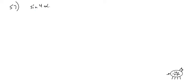Problem 57: sine of 4 alpha equals 4 sine of alpha cosine of alpha cosine of 2 alpha. This is very similar to cosine of 3 alpha that you did in class. We're working on the right-hand side, though you could also look at the left-hand side and just split up sine of 4 alpha.